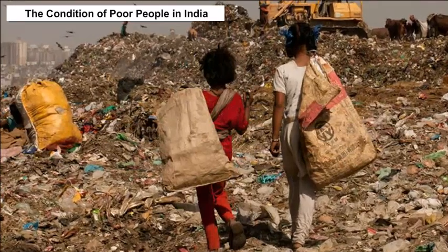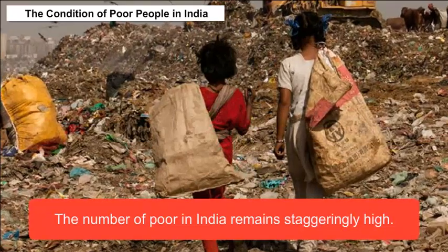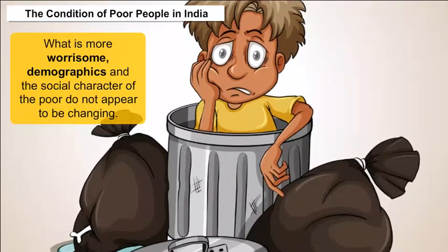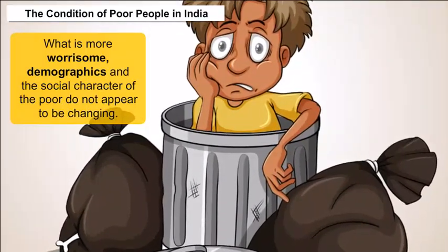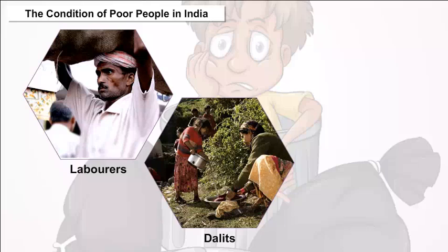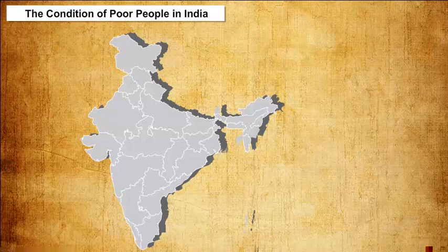The condition of poor people in India: the number of poor in India remains staggeringly high, and what is more worrisome, the demographics and social character of the poor do not appear to be changing. Laborers or farm workers in villages, casual workers in cities, tribal peoples, Dalits — formerly called low-caste untouchables — and Muslims remain the poorest Indians.